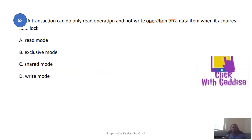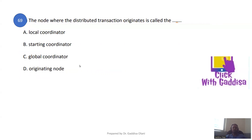A transaction can perform only read operations on a data item when it requires an exclusive lock. The node where the distributed transaction originates is called the originating node, global node, starting node, or local node.